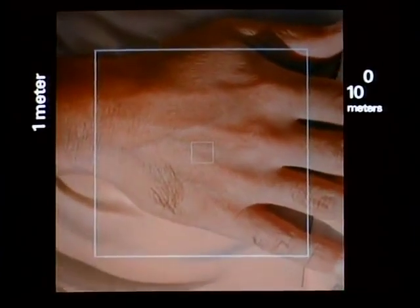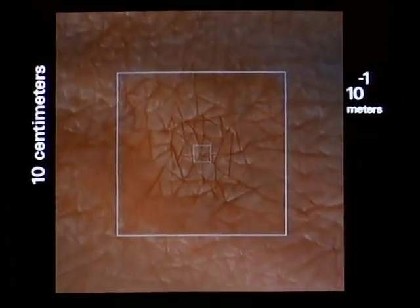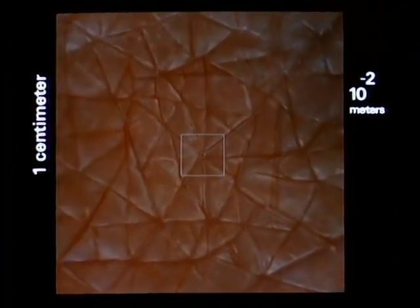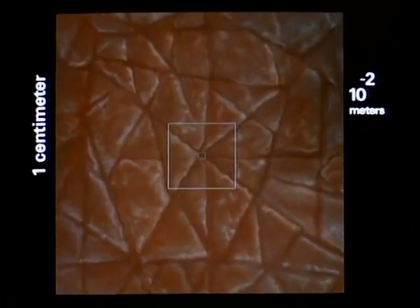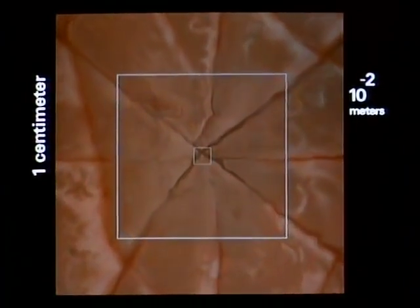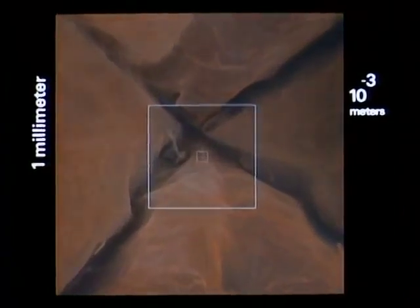At ten to the minus two, one one hundredth of a meter, one centimeter, we approach the surface of the hand. In a few seconds we'll be entering the skin, crossing layer after layer from the outermost dead cells into a tiny blood vessel within.